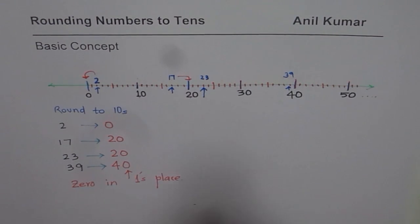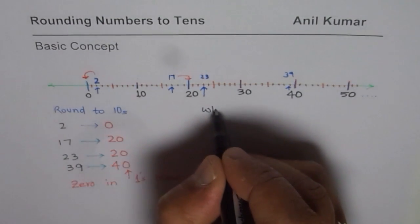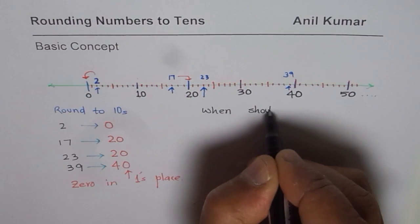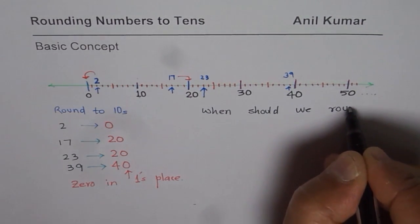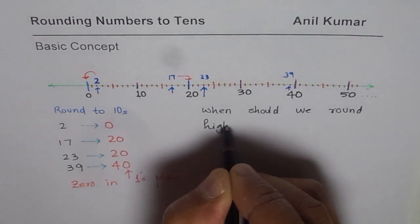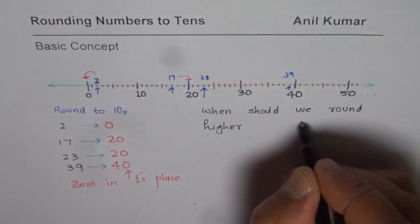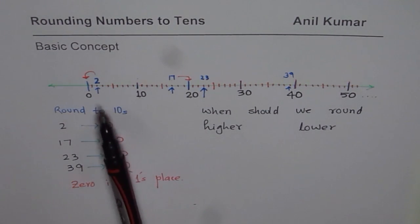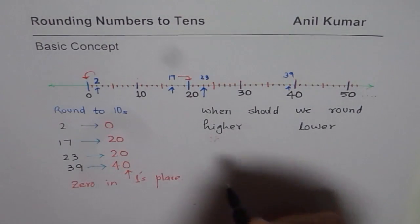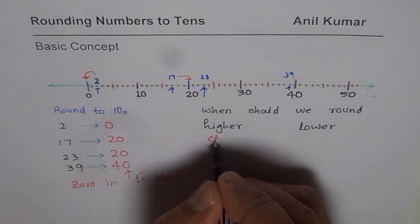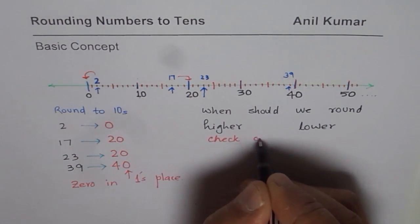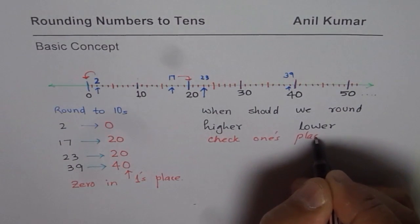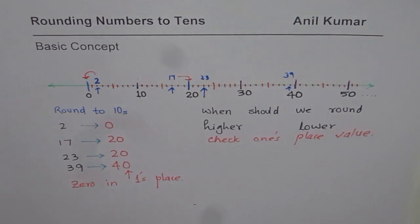Now the question is, when should we round higher? And when should we round lower? So that is what we need to check. If 1's place, this is your 1's place. So we check 1's place. For that, always check 1's place value.